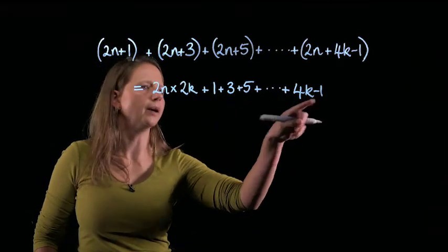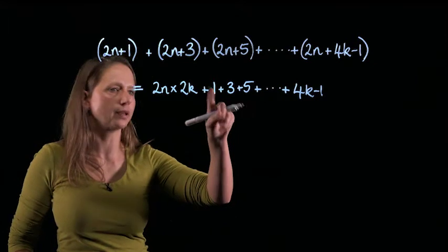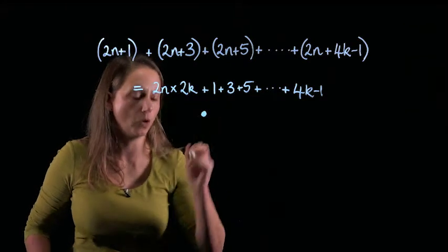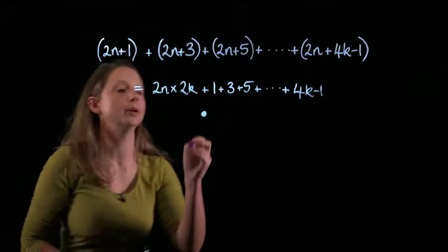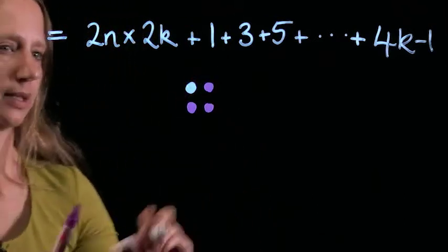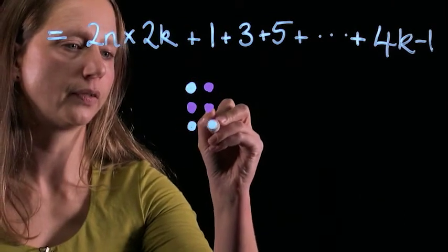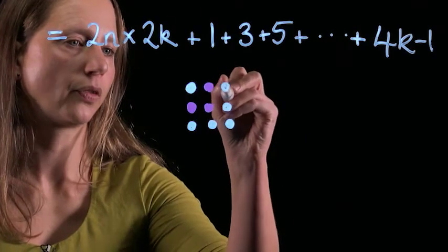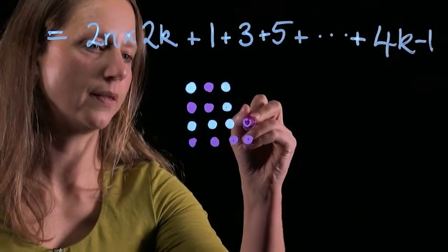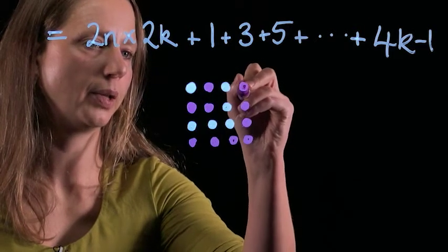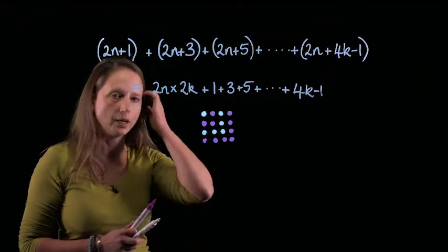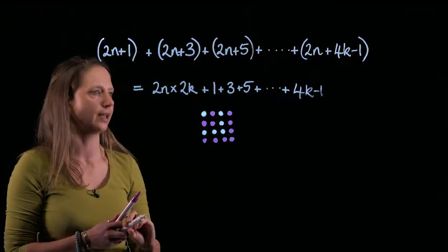You might already know something about sums of odd numbers. Sums of odd numbers starting at 1 always add up to give square numbers. But if you didn't know that already, take a look at this picture. 1, the first odd number, is a square number. And if I add on the next odd number, I get another square, 2 squared. And if I add on 5, I get 3 squared, then 4 squared. And this diagram with a little bit of logical argument is enough to show that when we add up odd numbers starting at 1, we always get a square number.